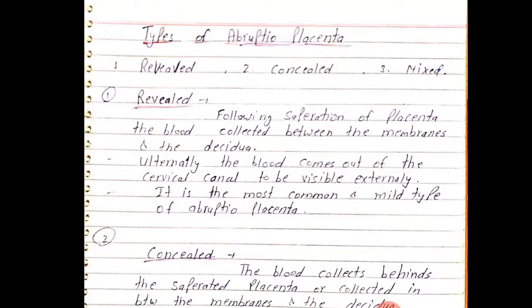There are three types of abruptio placenta: revealed, concealed, and mixed. In the revealed type, the placenta separates and blood collects between the membrane and the decidua. Some blood is visible outside. Bleeding is visible in some amount. It is the most common and mild type of abruptio placenta.